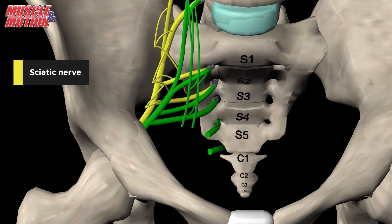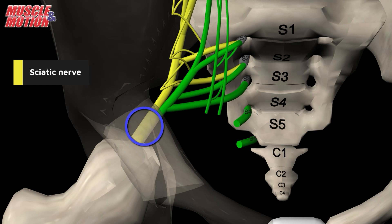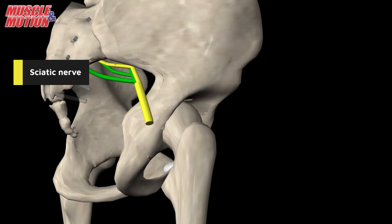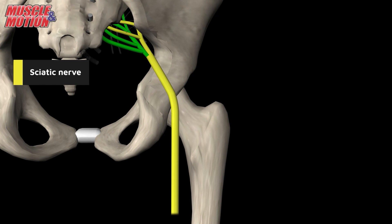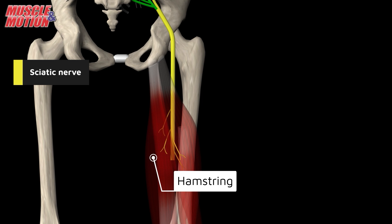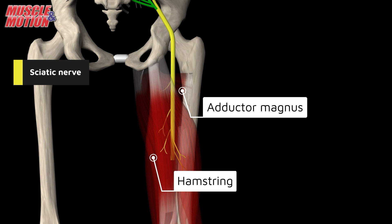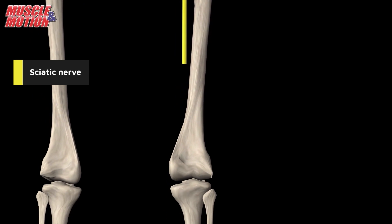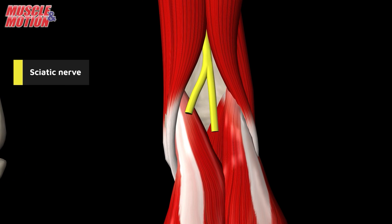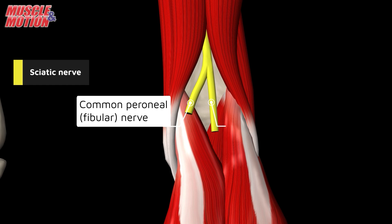The sciatic nerve is the largest branch of the sacral plexus. It arises from both the anterior and posterior divisions of the anterior rami of spinal nerves L4 to S3. It descends inferiorly at about the midpoint between the ischial tuberosity and the greater trochanter, giving branches to the hamstring muscles and the ischial fibers of the adductor magnus. It further descends and divides at the apex of the popliteal fossa into the common peroneal nerve, also known as the common fibular nerve, and the tibial nerve.